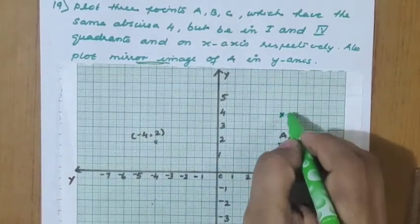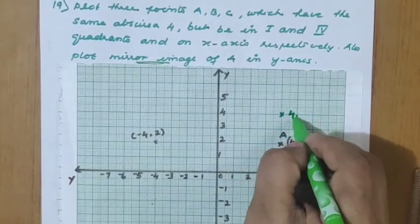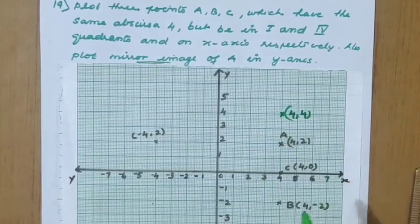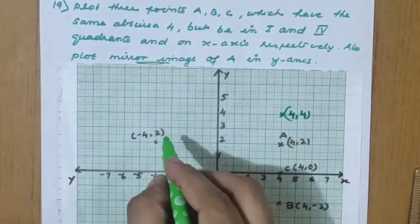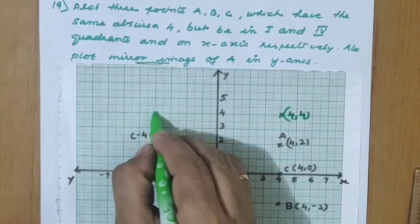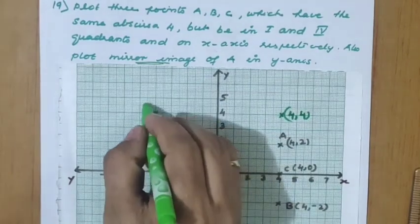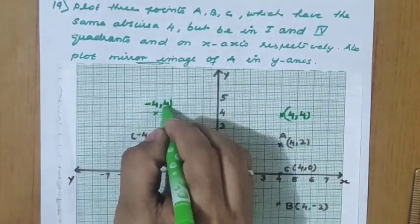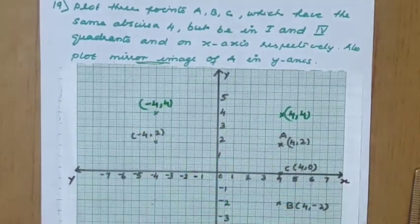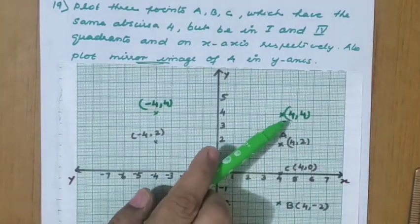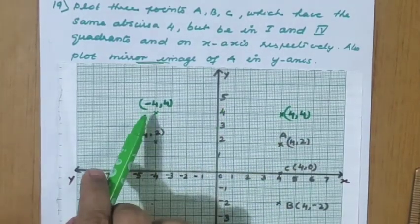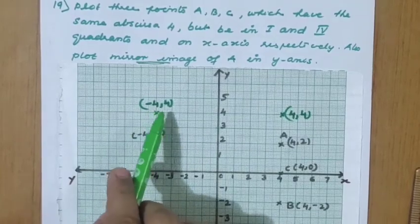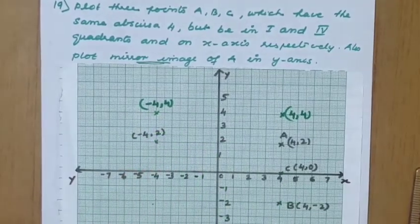So (4, 4) becomes (−4, 4) with respect to the y-axis. The mirror image of A (4, 2) is (−4, 2). I hope you understood this question — it is a different type of question.